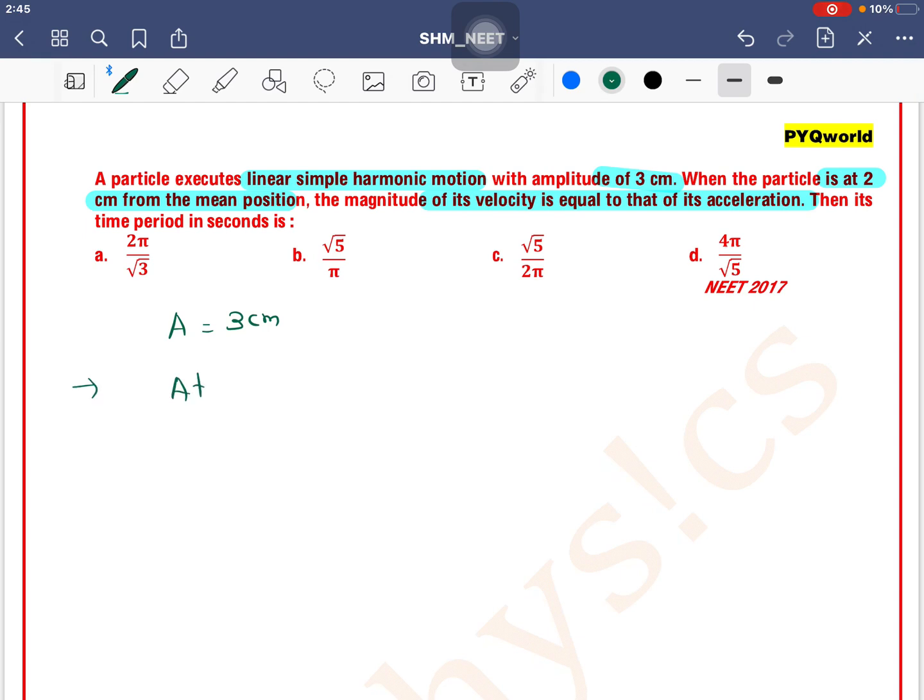At x equals 2 cm, magnitude of velocity is equal to magnitude of acceleration. Velocity magnitude is ω√(A²-x²) equals ω²x. The omegas cancel, giving √(A²-x²) equals ωx.